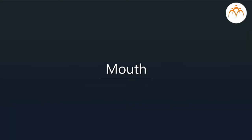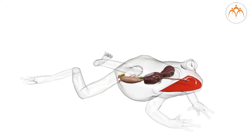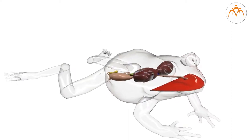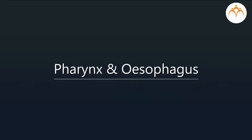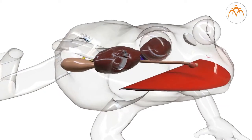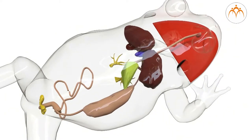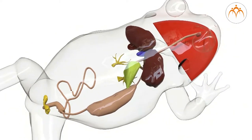Mouth. It is an opening present in the head region, that is called the anterior end. Inside the mouth, there is a mouth cavity, tongue, and teeth — just like humans. Pharynx and esophagus. Food from the mouth cavity goes to the pharynx and then into the esophagus. You can see the esophagus as a tube joining the mouth and stomach.